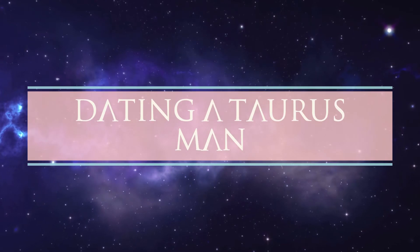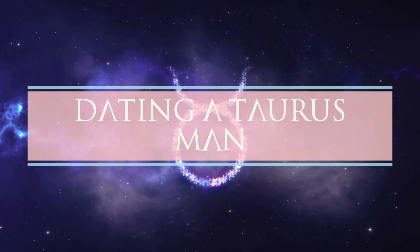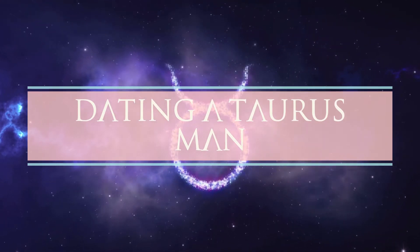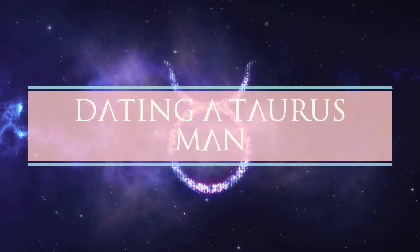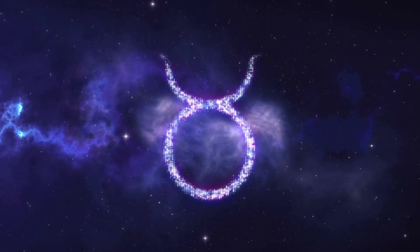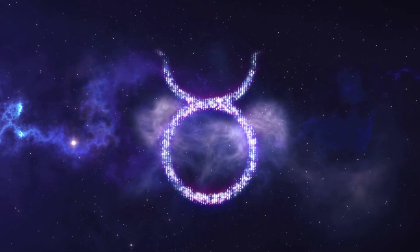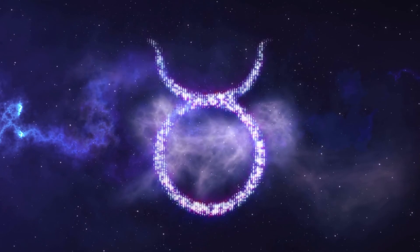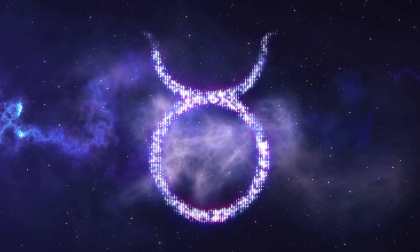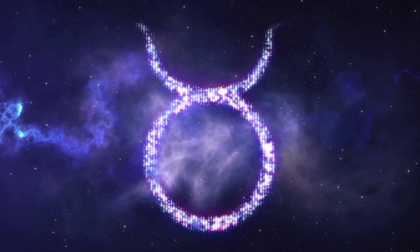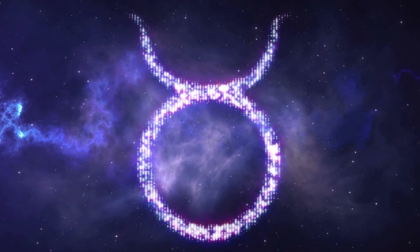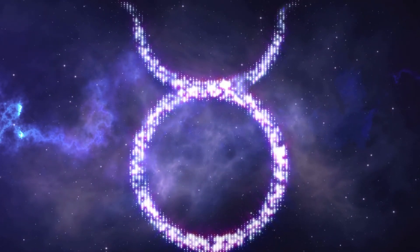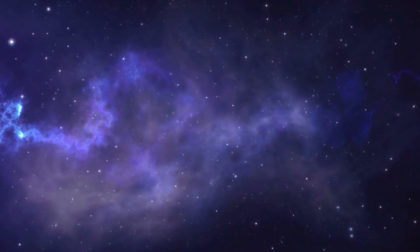Dating a Taurus man. Taurians want to be stable and consistent. They want to build a house with the person they love the most. When a Taurus man gets into a relationship, he doesn't plan to leave it for a long time. He has made a promise for life. Taurus don't care about short-term relationships. They want to find something that will last. If they didn't want to waste their time, they wouldn't.